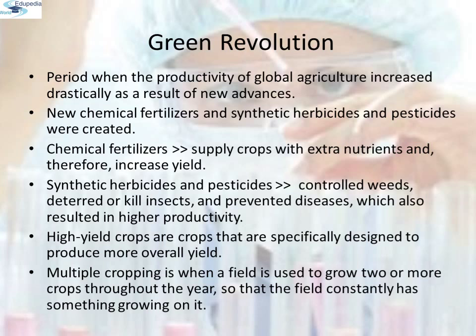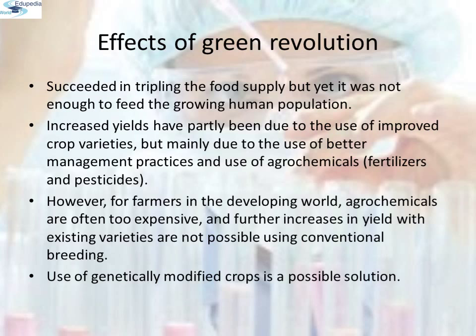Multiple cropping is when a field is used to grow two or more crops throughout the year so that the field constantly has something growing on it. These new farming techniques and advances in agriculture technology were utilized by farmers all over the world and intensified the result of the green revolution. The green revolution succeeded in tripling the food supply, but yet it was not enough to feed the growing human population. Increased yields have partly been due to the use of improved crop varieties, but mainly due to better management practices and use of agrochemicals like fertilizers and pesticides. However, for farmers in the developing world, agrochemicals are often too expensive.